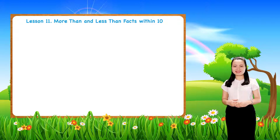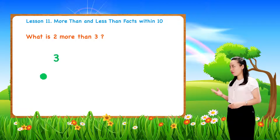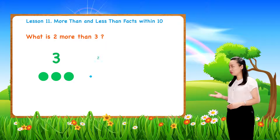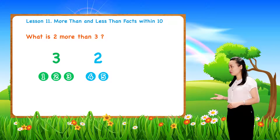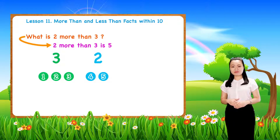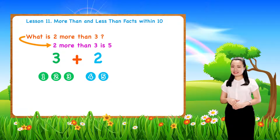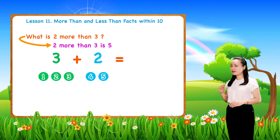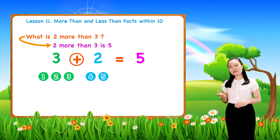Let's carry on. What is two more than three? Here, we have three dots and two more. So, we have five dots. Therefore, two more than three is five. Notice, three plus two equals five.